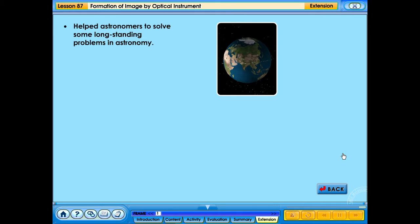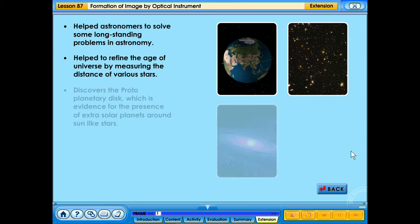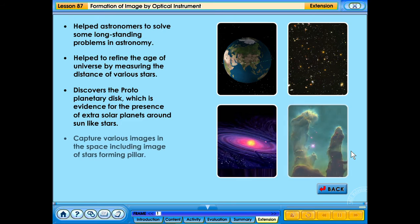Help astronomers to solve some long-standing problems in astronomy. Help to refine the age of universe by measuring the distance of various stars. Discover the protoplanetary disc which is evident for the presence of extrasolar planets around Sun-like stars. Capture various images in the space including images of stars forming pillar.